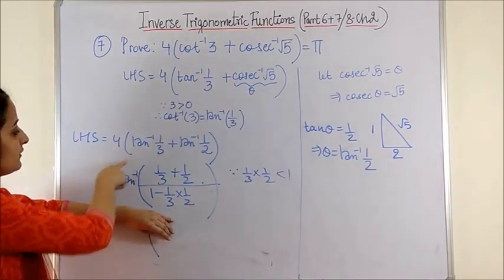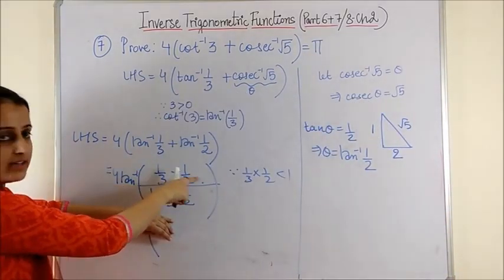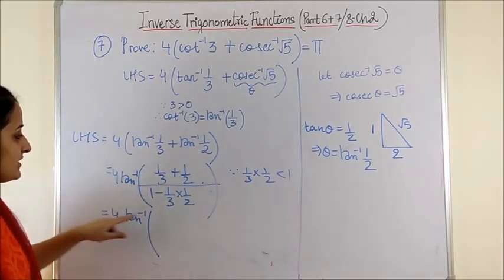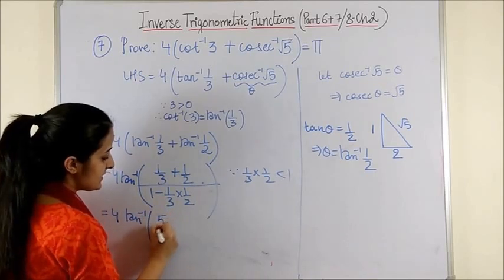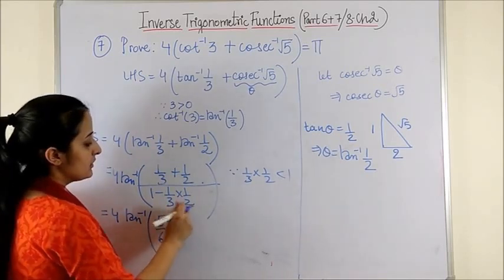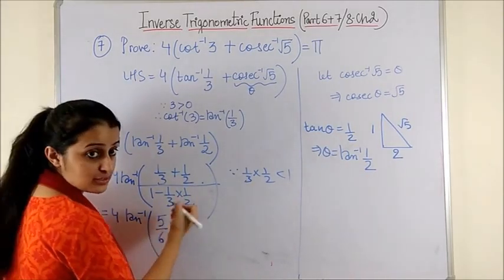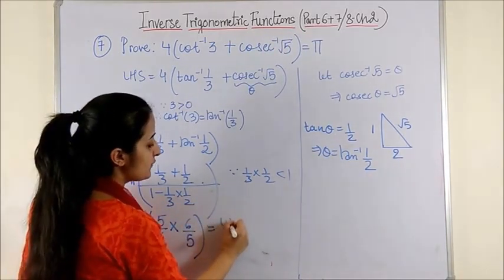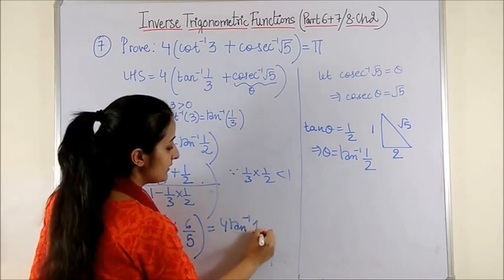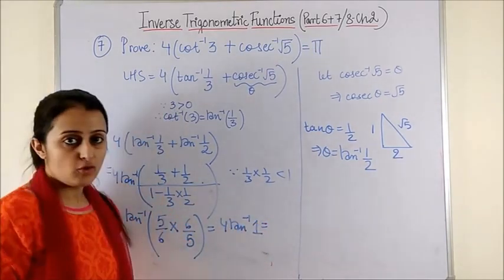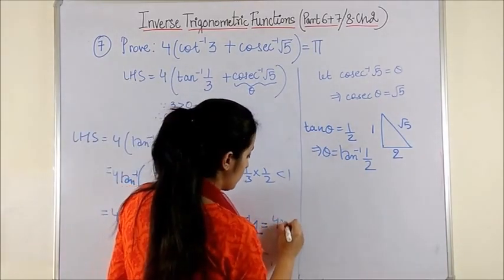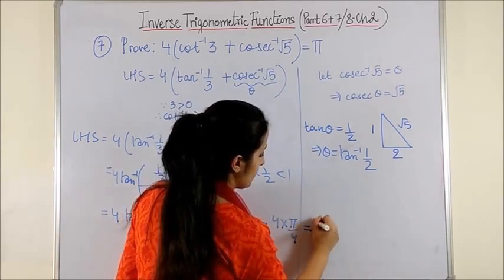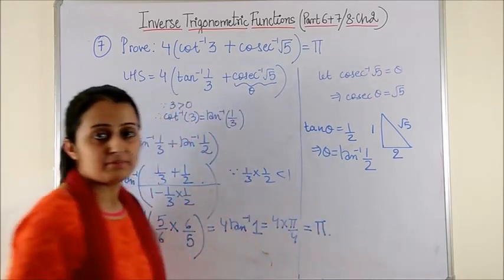So this gives us tan⁻¹[(1/3 + 1/2)/(1 − 1/6)]. When we simplify, we get 5/6 over 5/6, which gives us tan⁻¹(1), and the answer is π/4.